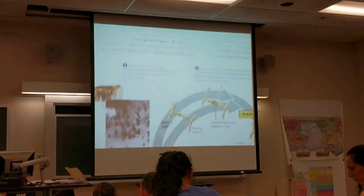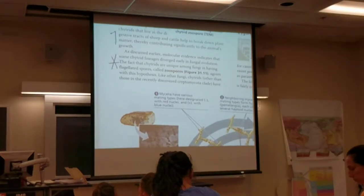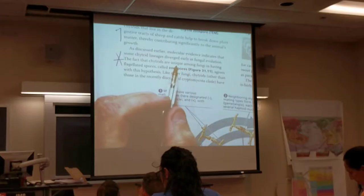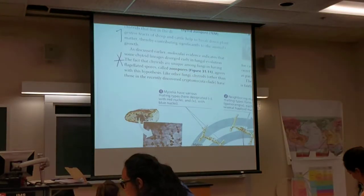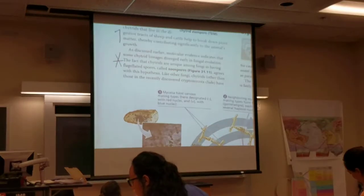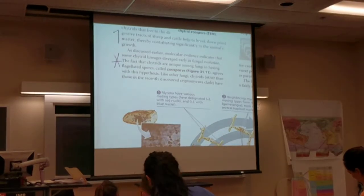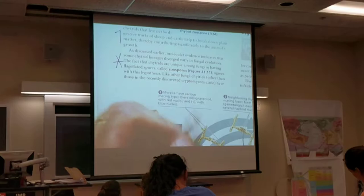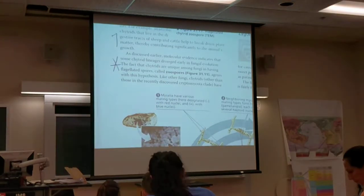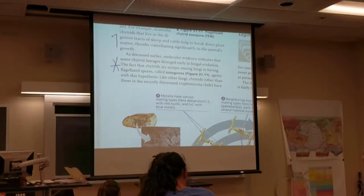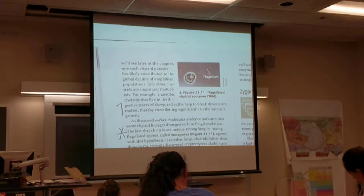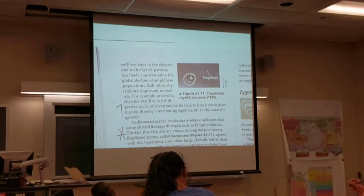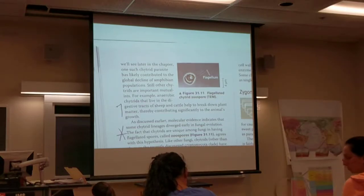What defines the chytrids? They are unique among fungi in having flagellated spores called zoospores. There's a micrograph of one of these spores with its flagellum that helps them locomote in wet soils or aquatic situations.